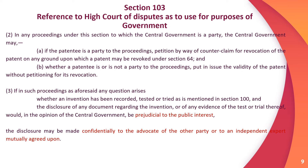Subsection 3: If in such proceedings any question arises whether an invention has been recorded or tested or tried as mentioned in Section 100, and the disclosure of any document regarding the invention or of any evidence of test or trial would in the opinion of the central government be prejudicial to the public interest, then the disclosure may be made confidentially to the advocate of the other party or to an independent expert mutually agreed upon.